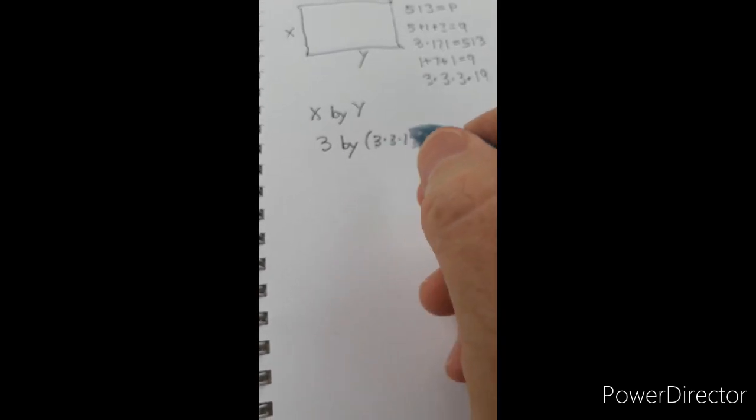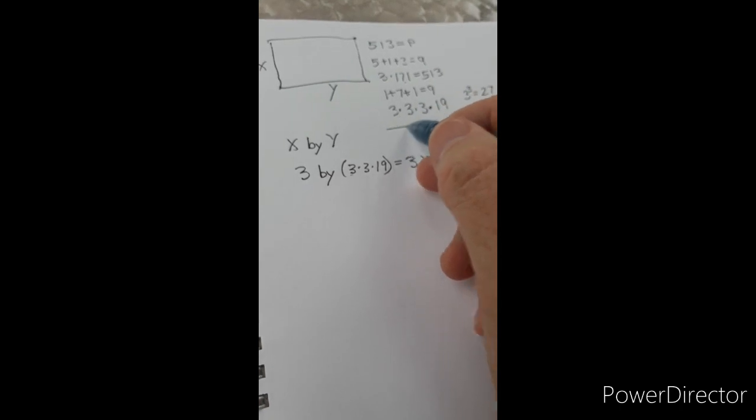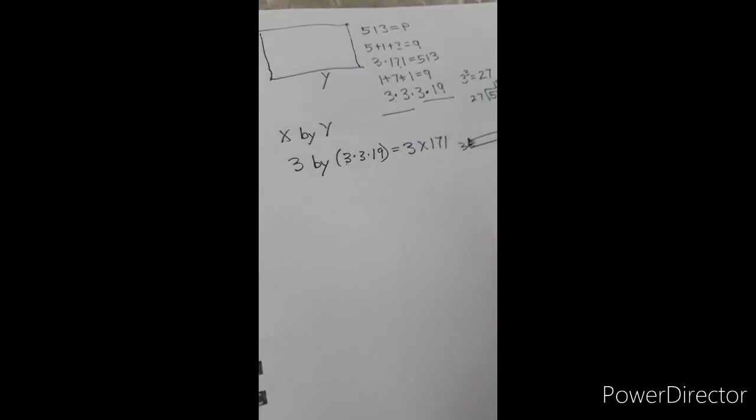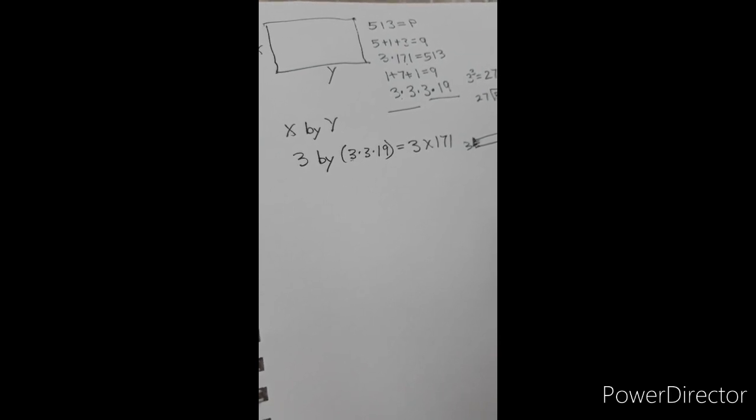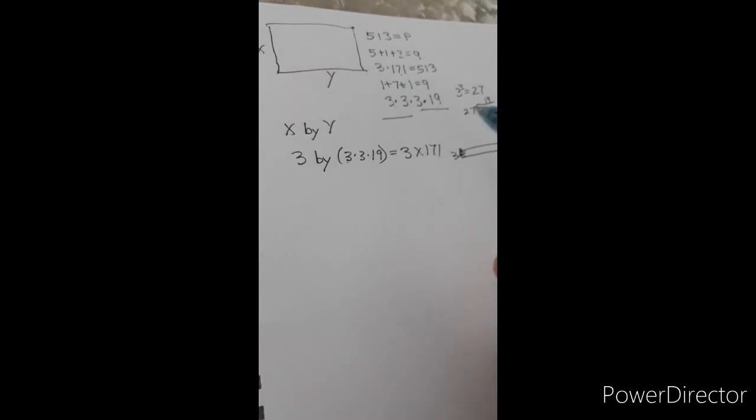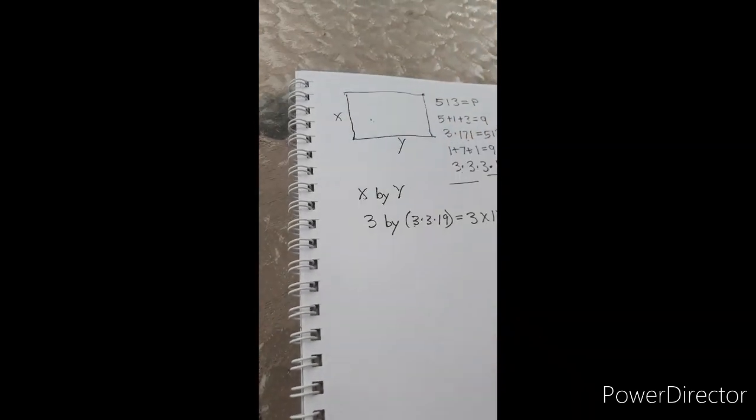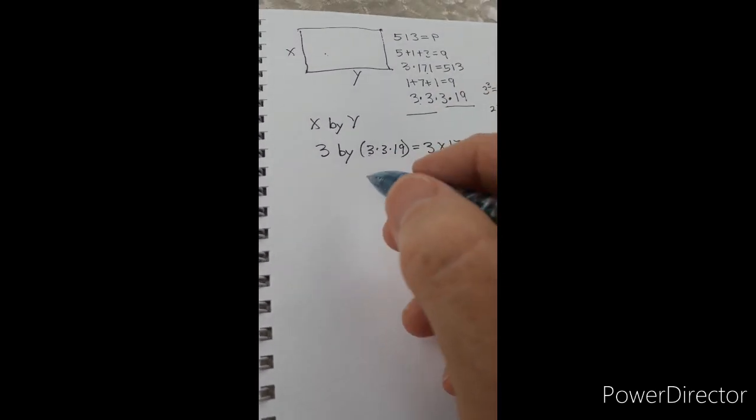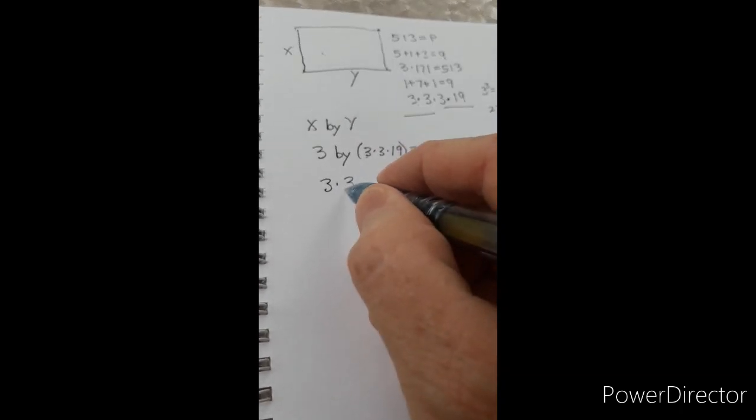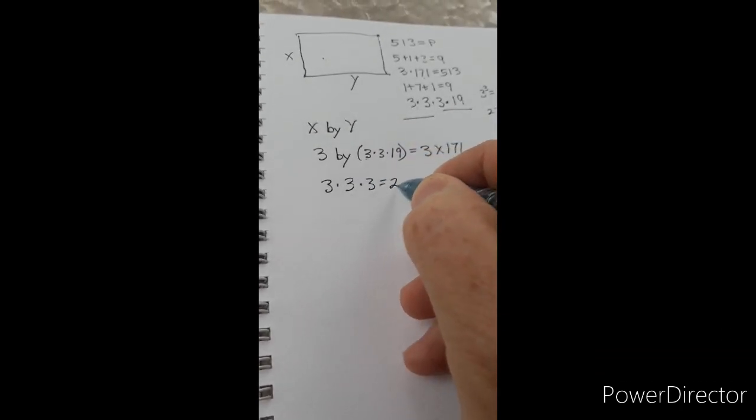We play around some more and try 3×3 and 3×19, but that's a 9 by something. Also, the 9 is too skinny. Puzzles are not long and skinny like that, they have to be more rectangular in shape. So we're going to try something else: 3×3×3, which is 27.